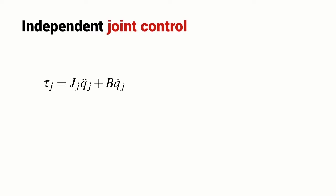In the last lecture, we considered independent joint control which is an idealization of the real world. With independent joint control, the motor torque has got two components. It has a component due to the motor's inertia and has a component due to the motor's viscous friction.